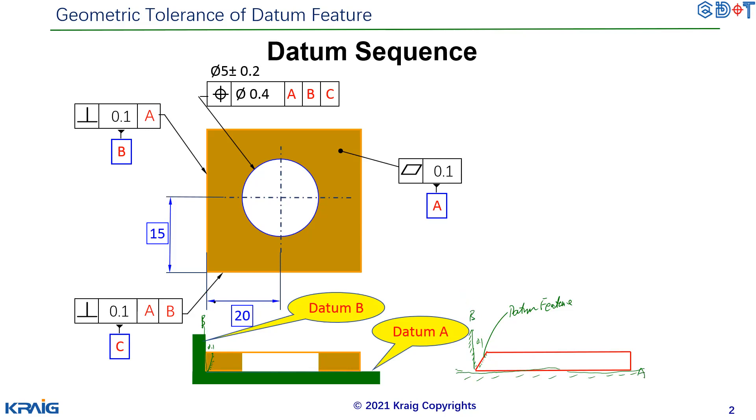So this datum B and here's datum A. So now you understand this 20 is from the datum feature simulator. It is 20. So you'll find the datum feature simulator and then you can get 20. So long and short, the datum feature simulator should always be at perfect form, perfect orientation and later we can see the perfect location to the previous datum.